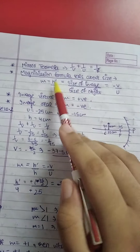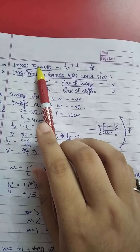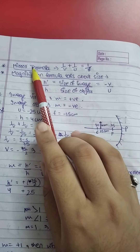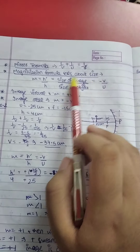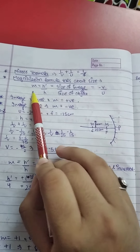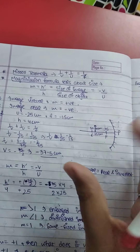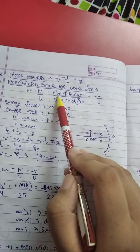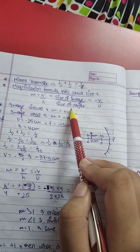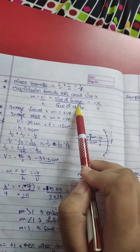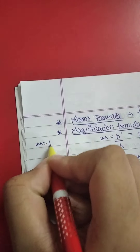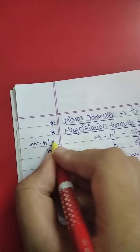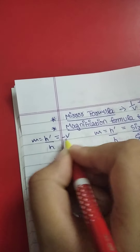From sign convention we have two formulas: the mirror formula, which is 1/v + 1/u = 1/f, and the magnification formula, where m = H'/H (size of image divided by size of object). We can also write magnification as m = -v/u. Both formulas can be used.